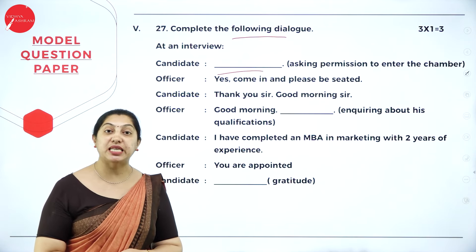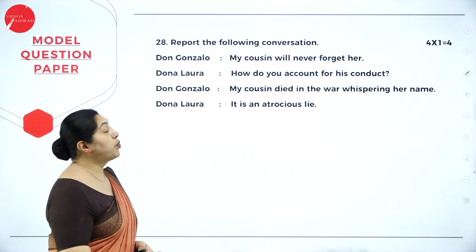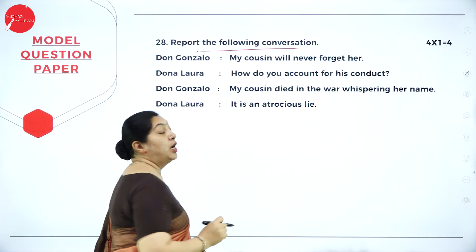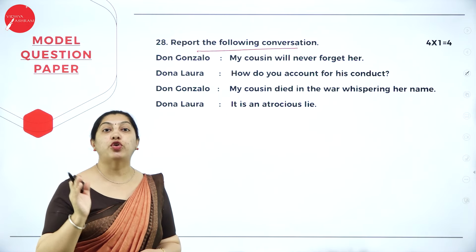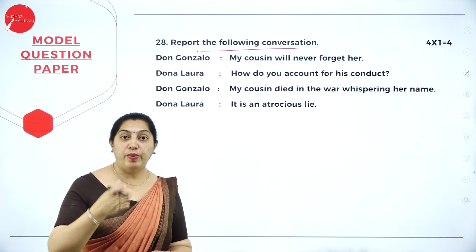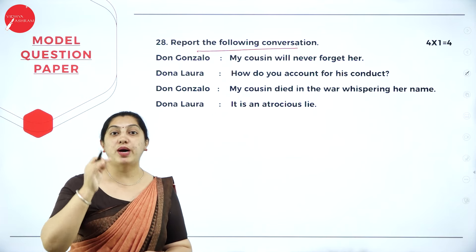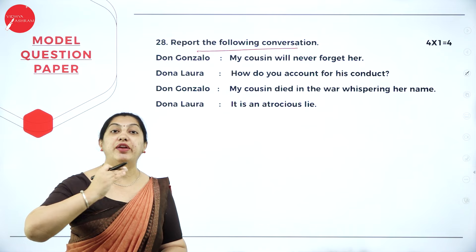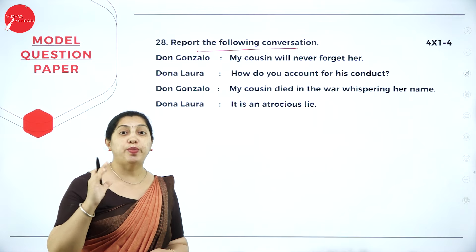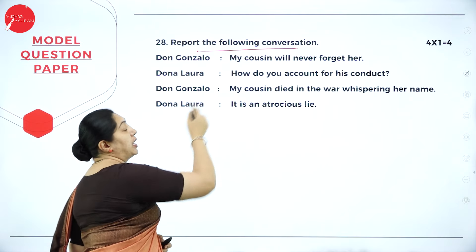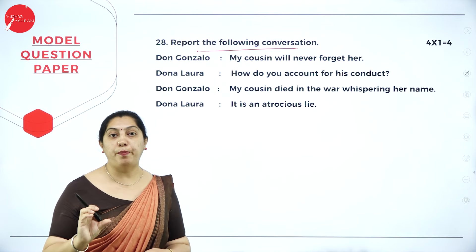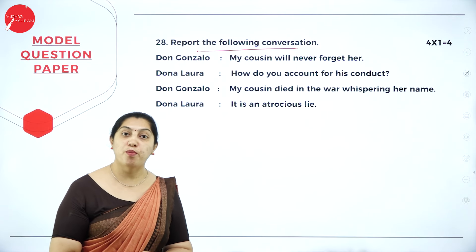Question number 28 is report the conversation — don't confuse this with report writing. Report the conversation is indirect speech: everything is in direct speech with inverted commas and question marks, and you have to remove those and rewrite it in indirect speech. This question carries four marks and the answer must be written in a single paragraph, not in dialogue form.